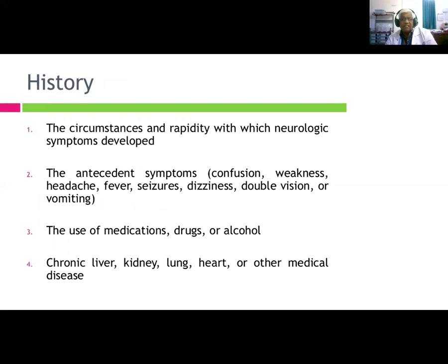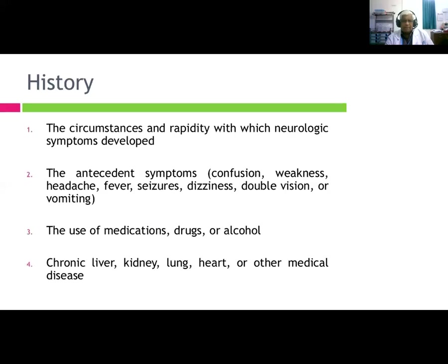Assess the circumstances under which the neurological symptoms developed: antecedent symptoms such as confusion, weakness, headache, fever, seizures, dizziness, double vision, or vomiting. Vomiting is very important in hypertensive patients — in hemorrhagic stroke with raised ICP, it causes projectile vomiting and severe throbbing headache.